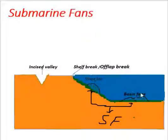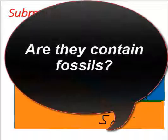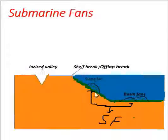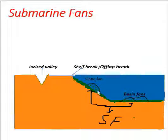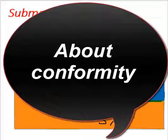Submarine pens are associated with type 1 sequence boundary. Submarine pens contain broken fragments of parcels of shelf area or this incised wheelie.